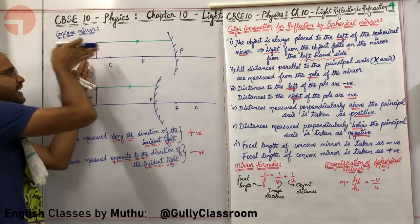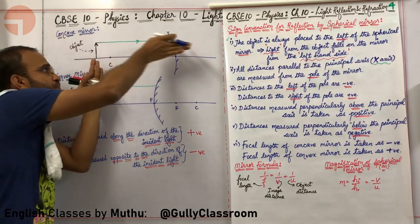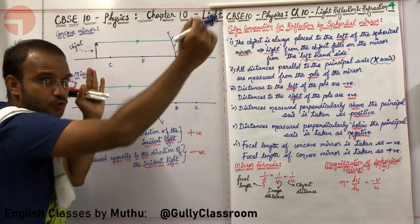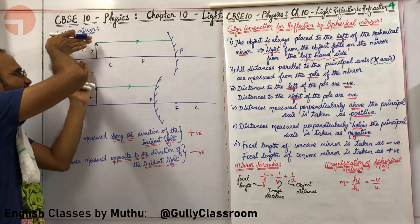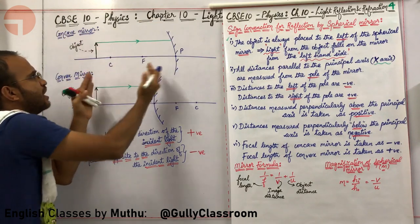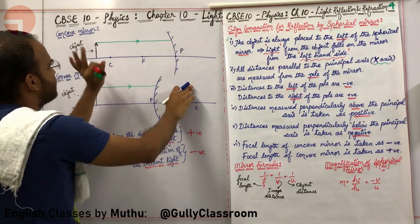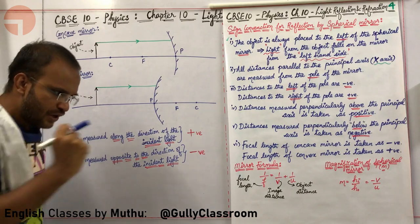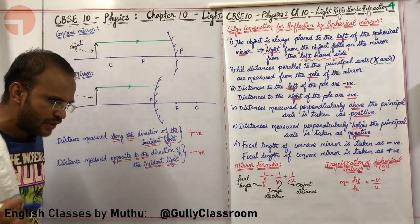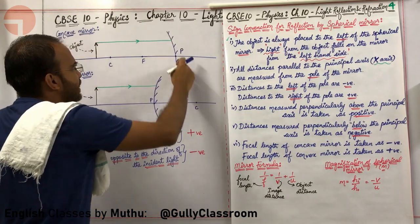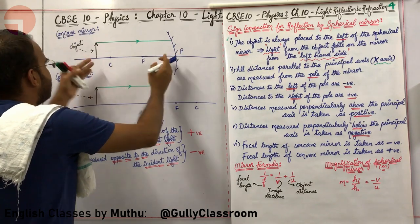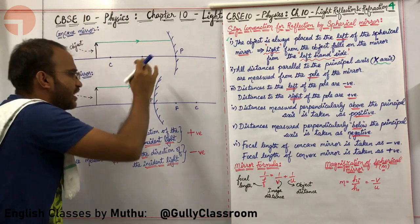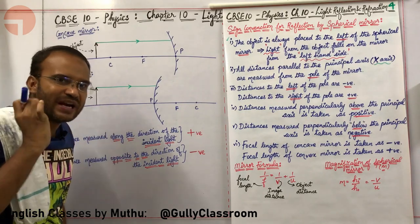Light is falling on the mirror from the left-hand side — from a light source such as a tube light. The light comes from the tube light, falls on the object, and travels towards the spherical mirror from the left-hand side. This is the standard that we have accepted for each and every spherical mirror problem.